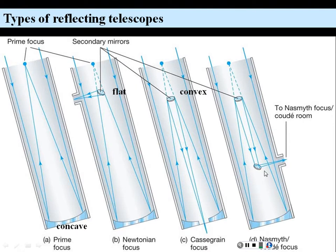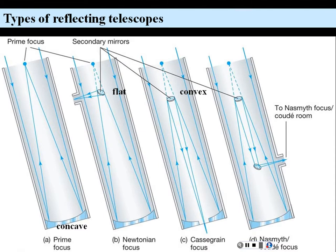We can also add another mirror. So we have a concave primary reflecting to a convex secondary as in the Cassegrain, but then another flat mirror redirects it to the side — called the Nasmyth focus — to a coudé room, where the image can be projected and analyzed.